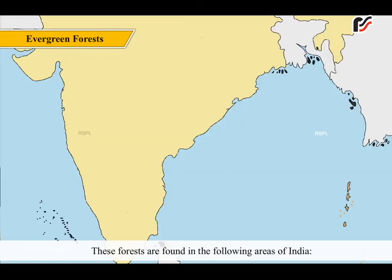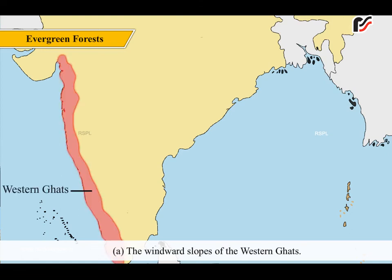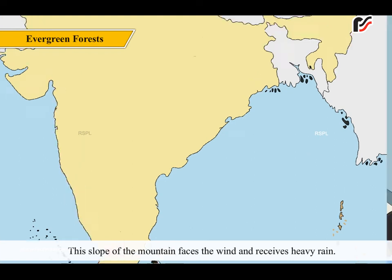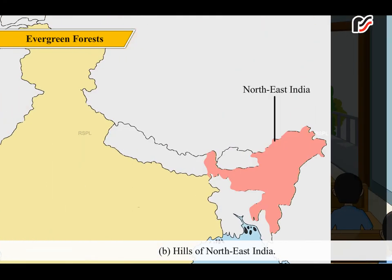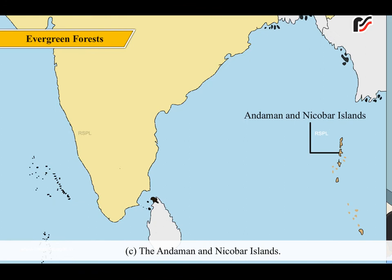These forests are found in the following areas of India: a. The windward slopes of the Western Ghats, where the mountain faces the wind and receives heavy rain. b. Hills of northeast India. c. The Andaman and Nicobar Islands.